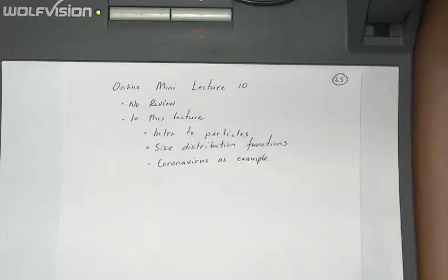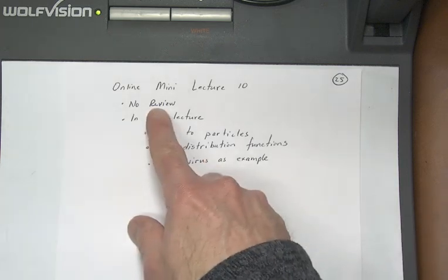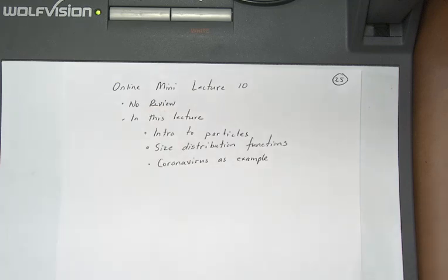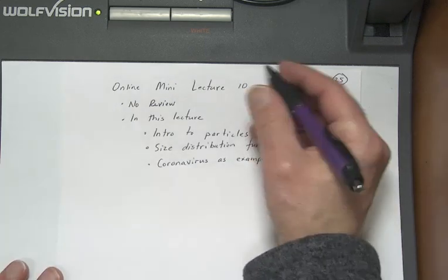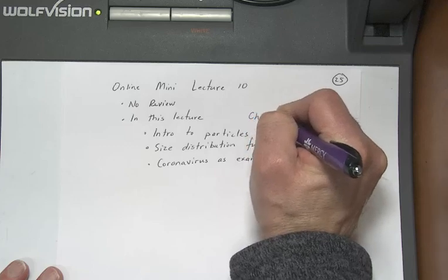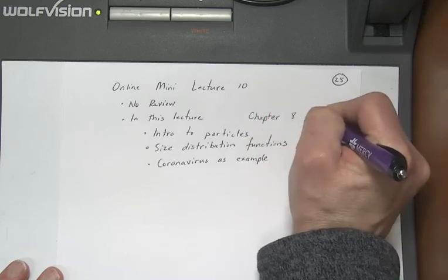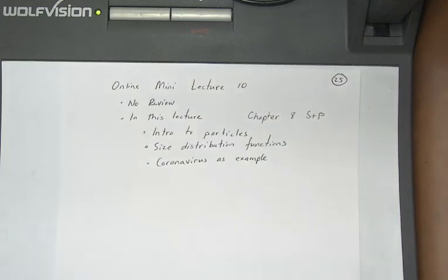Okay, welcome to online mini-lecture 10 for Atmospheric Chemistry and Physics. Charlie Stanier here. I'm skipping the review because we're totally changing topics. We're switching from atmospheric chemistry to particles, aerosol particles. The reading that goes with this is Chapter 8 in Seinfeld and Pandis. In this lecture, I'm going to talk about an introduction of particles, size distribution functions, and I'll be pulling in some coronavirus examples as I go.